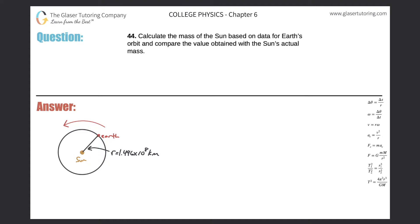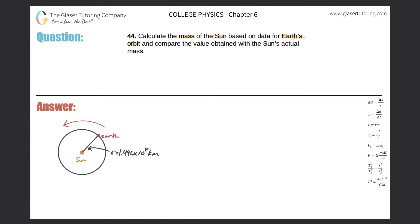Problem number 44: calculate the mass of the sun based on data for Earth's orbit and compare the value obtained with the sun's actual mass. Here's the setup — the sun is here, the Earth is here, and we know the radius between the two objects.